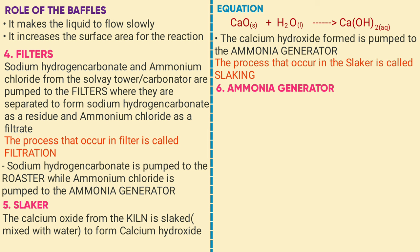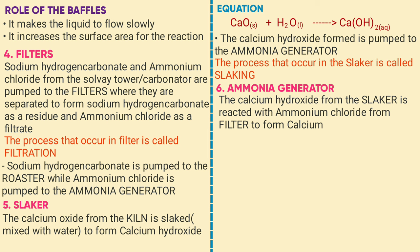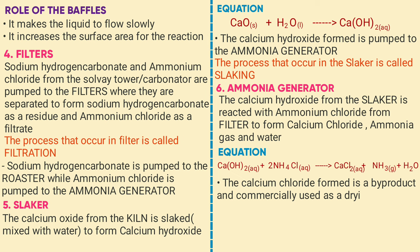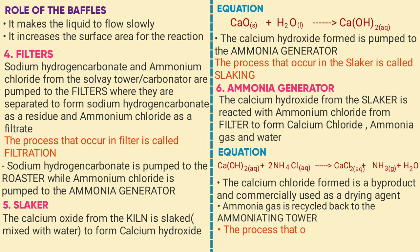The next part is the ammonia generator. The calcium hydroxide from the slaker reacts with ammonium chloride from the filter to form calcium chloride, ammonia, and water. The equation is: Ca(OH)₂ (aq) + 2NH₄Cl (aq) → CaCl₂ (aq) + 2NH₃ (g) + H₂O (l). The calcium chloride is formed as a by-product and is emitted outside; it is commonly used as a drying agent. Ammonia is recycled to the ammoniation tower. The process is called ammonia regeneration.